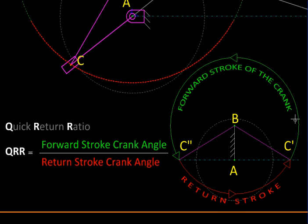It is a ratio of angle turned by the crank during the forward stroke of the tool, divided by the angle turned by the crank for the return stroke of the tool. Since the crank is usually connected to an electric motor, these angles directly translate into the time taken for forward and the return stroke.